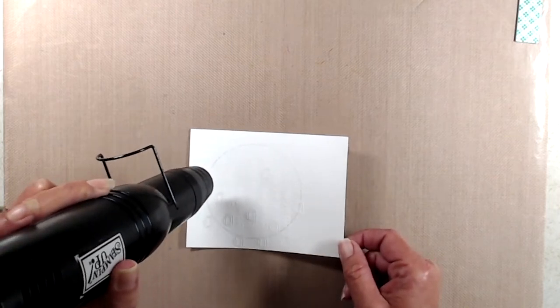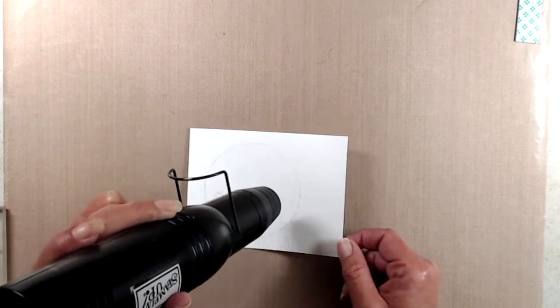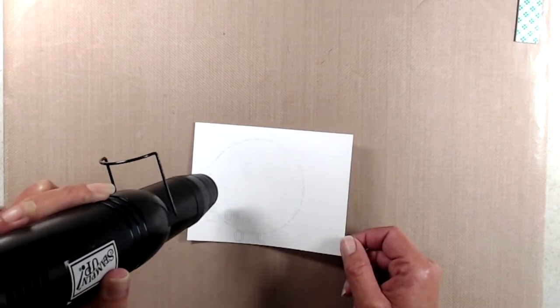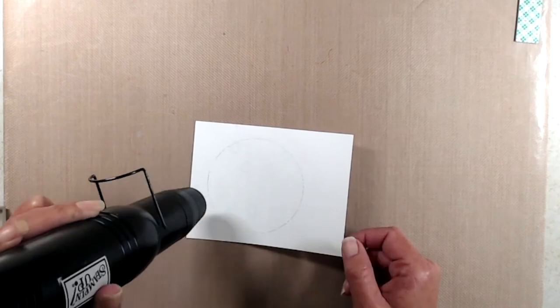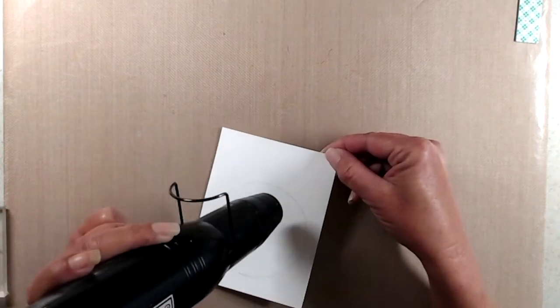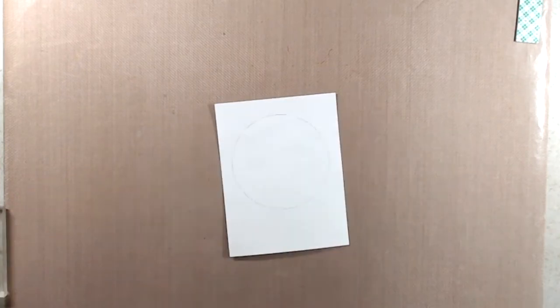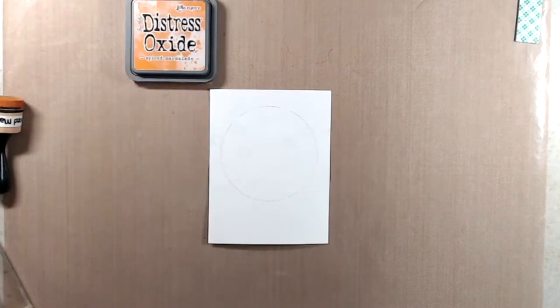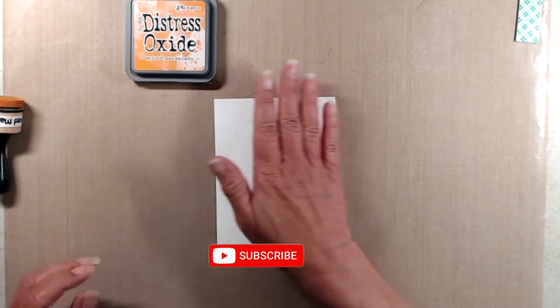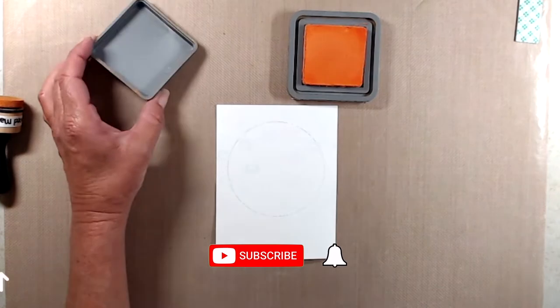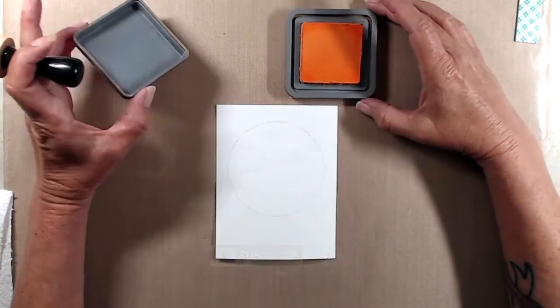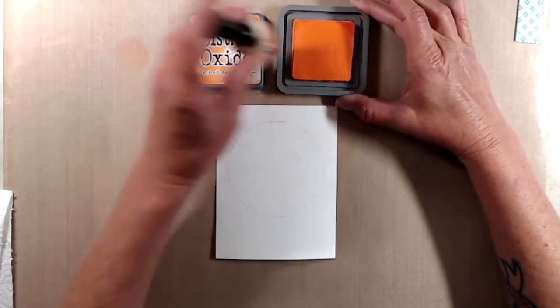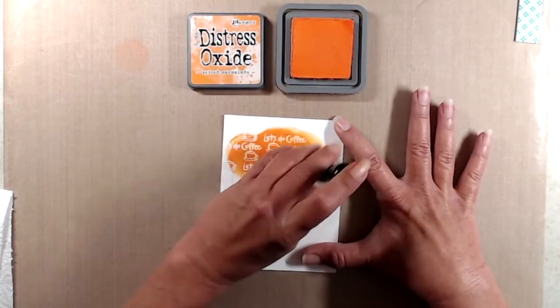I stamped this using Versamark ink so that I could do some heat embossing. I coated it with detail white embossing powder and heat set that with my heat tool. When you're heating with a heat tool, you want to move the heat gun back and forth over the embossing powder slowly. You don't necessarily need to shake it like you would a hairdryer.